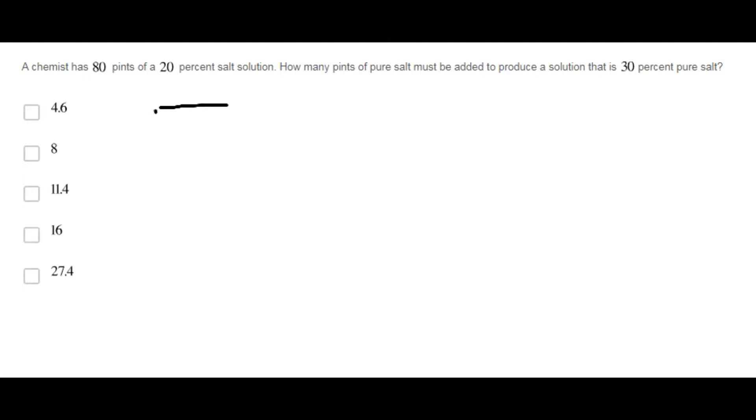So, the original solution contains 80 pints. 20% of the solution is salt. 20% of 80 pints is 16 pints.